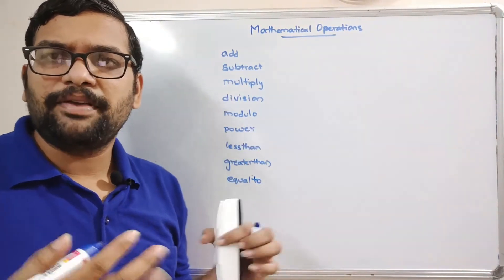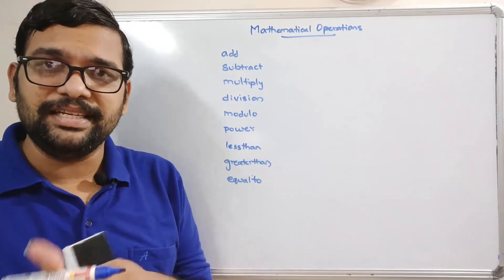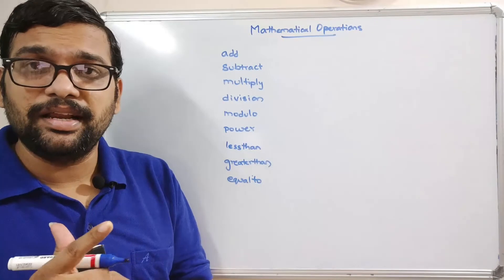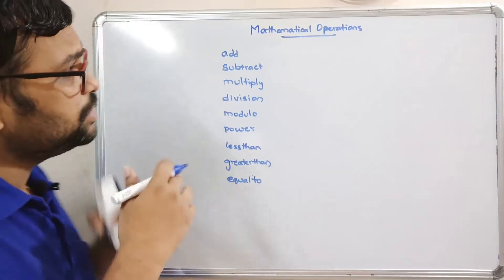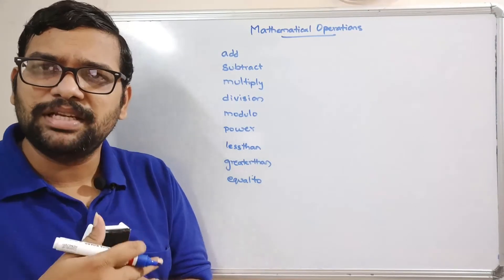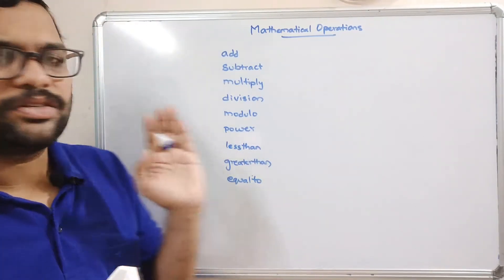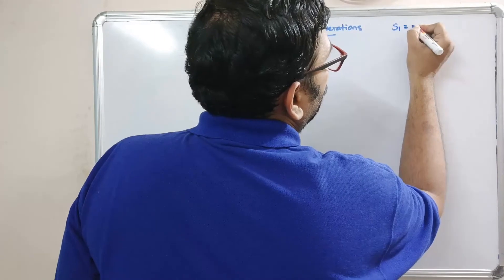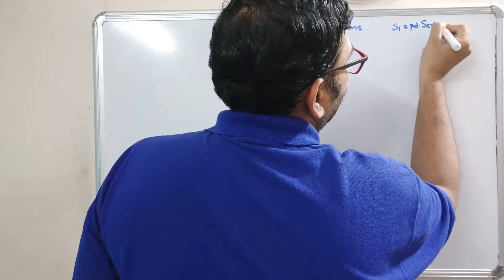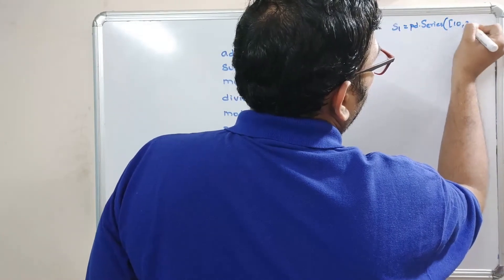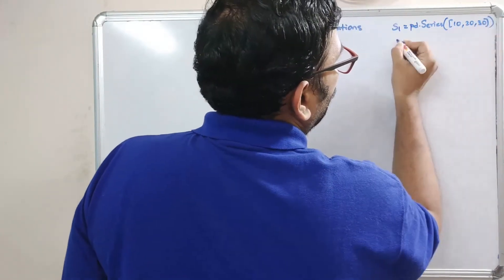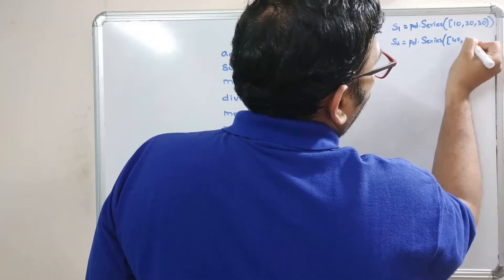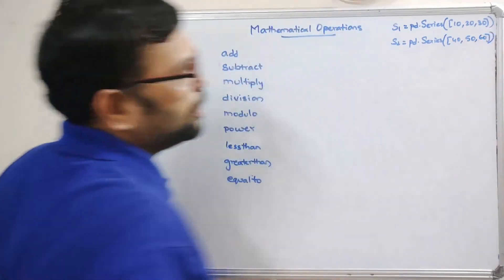Before applying these operations, we first need to create two different Series. We have already seen how many ways we can create a Series, and using one of those approaches we can create multiple Series. So let's take s1 = pd.Series([10, 20, 30]) and s2 = pd.Series([40, 50, 60]).